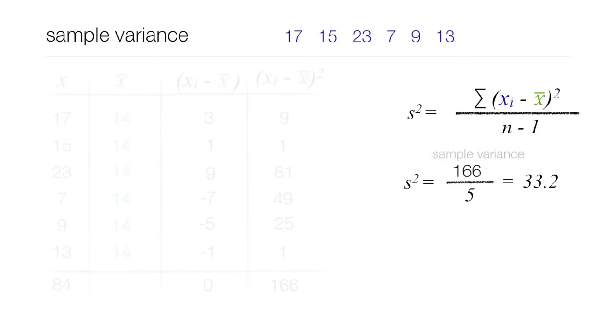Now if I take that 33.2 and take the square root of that, that's the sample standard deviation, which is s equals 5.76.